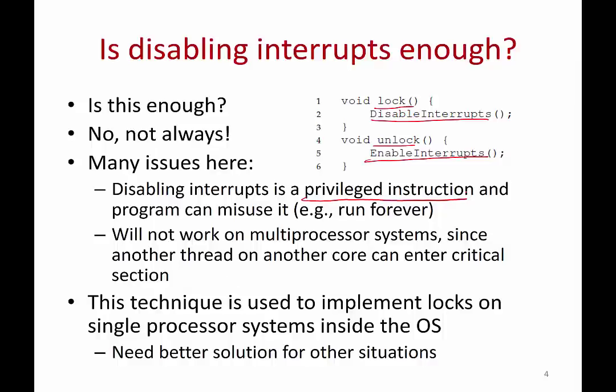Another important reason is that this won't work on multi-core, multi-processor systems. If one thread is running on one CPU and another thread is running on another CPU, even if you say 'do not interrupt me' on this CPU, the thread on the other CPU can still go ahead and access your shared data. It is not possible to control execution on another CPU or processor somewhere else.